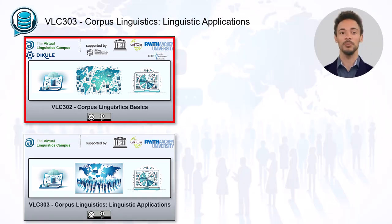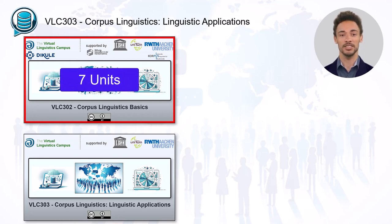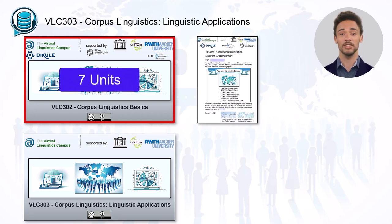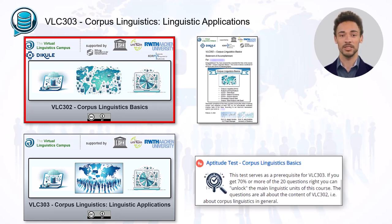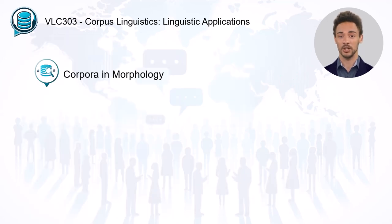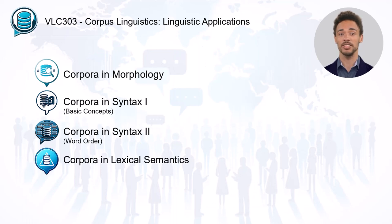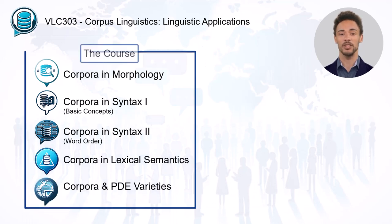Prerequisite for participation in VLC 303 is the successful completion of VLC 302. To make sure you have done this, we have designed an aptitude test with questions from VLC 302. Only if you get 70% or more of the 20 randomly chosen questions right, you can unlock the linguistic content units of our new course.